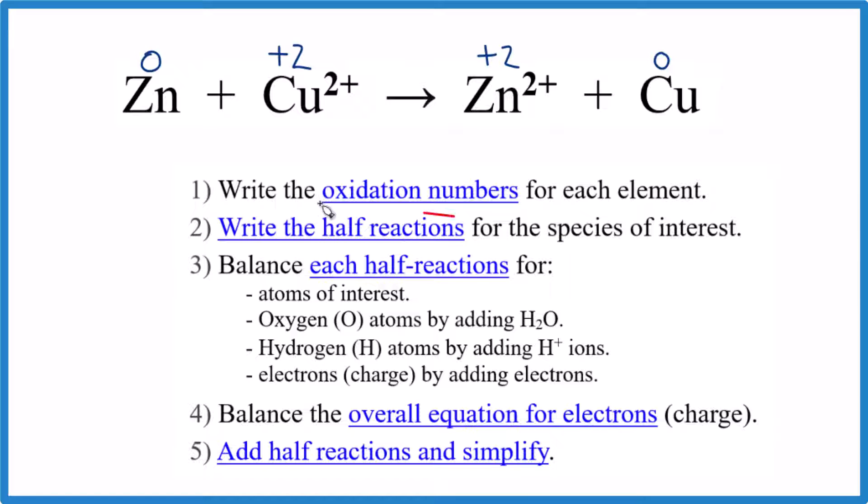Once we have the oxidation numbers, we can write the half reactions. When you look at this, the zinc goes from zero to plus two. The copper goes from plus two to zero. The way I think about it, we had plus two, we went to zero. The number got smaller, we've been reduced.